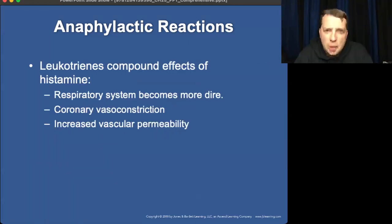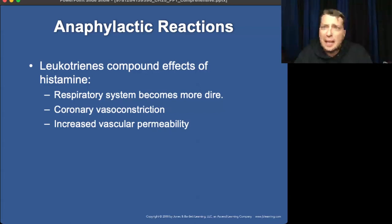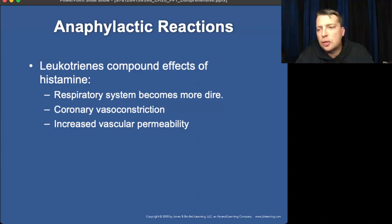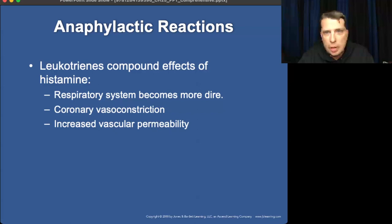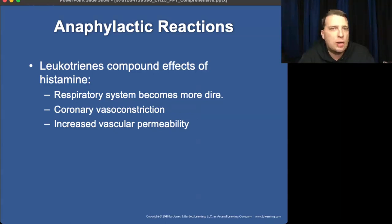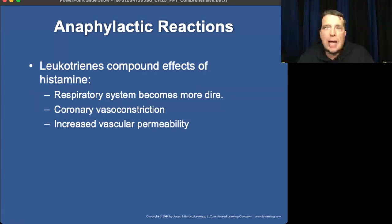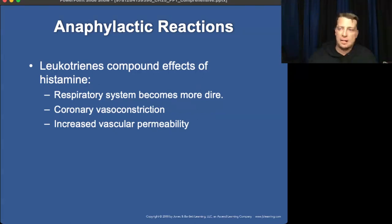Leukotrienes are similar to histamine but are a different chemical and are longer-lasting. When they activate, they're a lot harder to deal with. Histamine is rapid onset but easier to deal with; leukotrienes last longer and cause bigger concerns. In pre-hospital care we won't know if we're dealing with leukotrienes or histamines, so our focus is steroids (which combat both), antihistamines (histamine only), and epinephrine. Epi doesn't stop histamines or leukotrienes — it simply reverses the problems histamines cause, using a different mechanism to cause vasoconstriction and balance out the vasodilation.